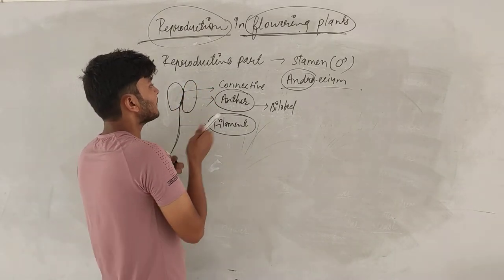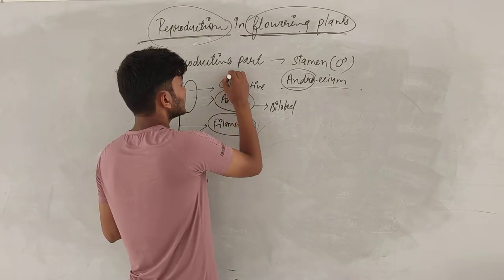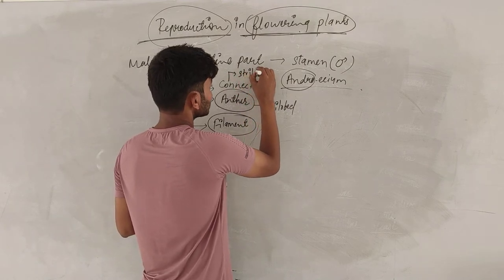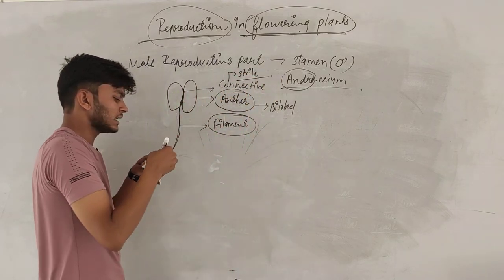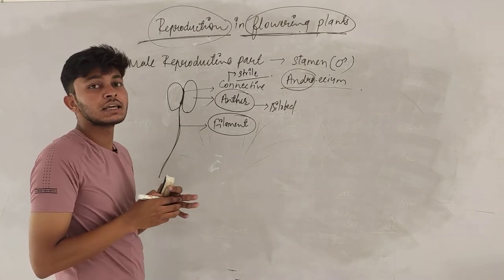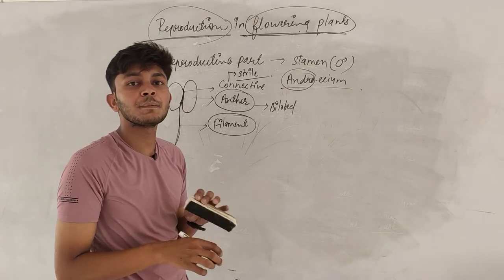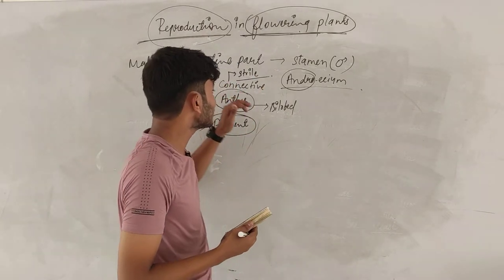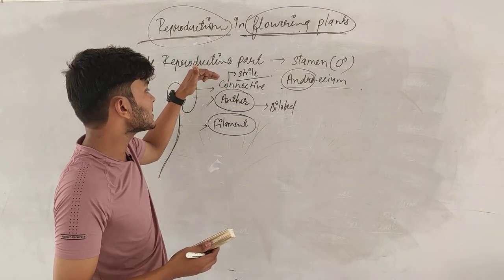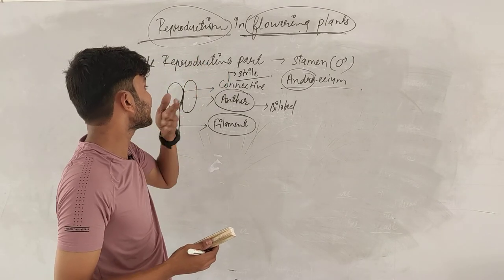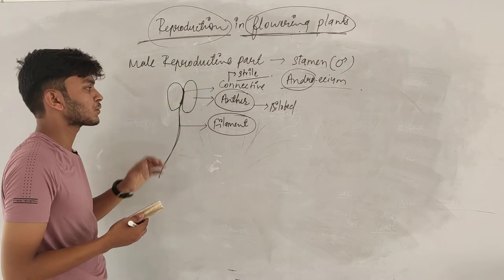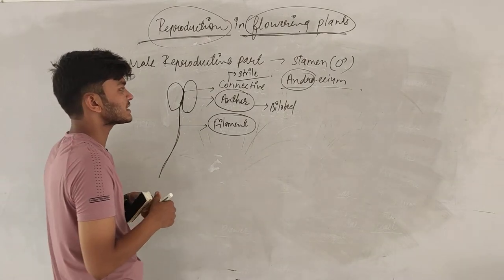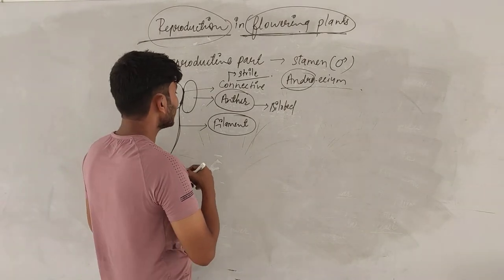The connective is a sterile part. This is a sterile structure which plays a role in reproduction and differentiation.